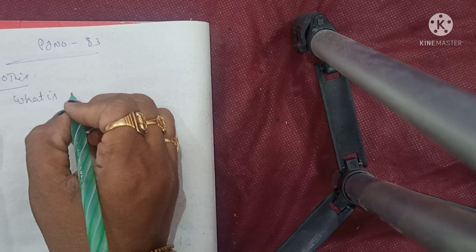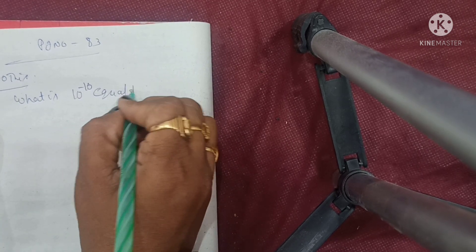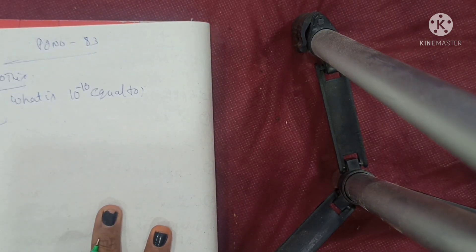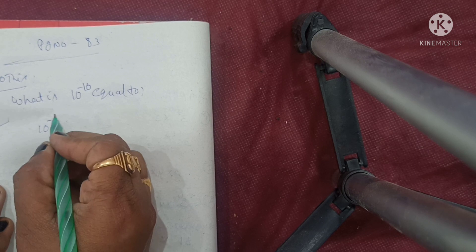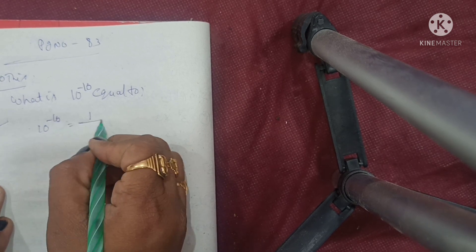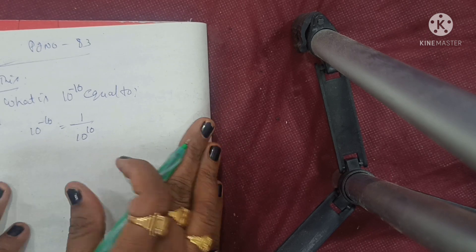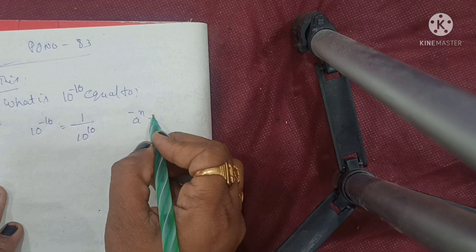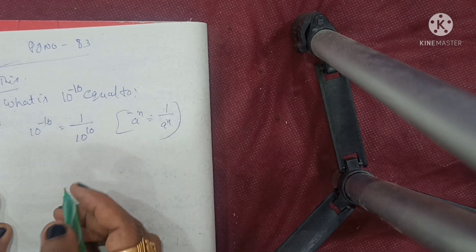What is 10 power of minus 10 equal to? Solution: 10 power of minus 10 is written as 1 by 10 power of 10. Using the formula a^(-n) = 1 by a^n. Simple.